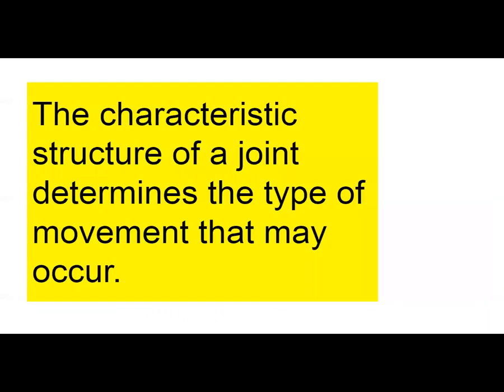In your review for Chapter 6, there are a few fill-in-the-blank statements you might have to do on the test. The characteristic structure of a joint determines the type of movement that can occur — structure of the joint determines the type of movement. That's an important principle.